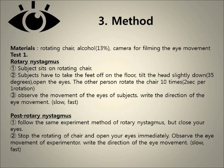For Post-Rotary Nystagmus, follow the same experiment method as Rotary Nystagmus but close the eyes. Stop the rotating chair and open the eyes immediately. Observe the eye movement of the subject and write down the direction of the eye movement.